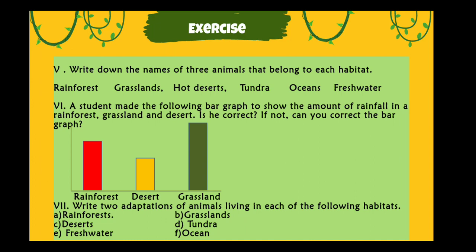Number seven: write two adaptations of animals living in each of the following habitats — rainforest, grasslands, deserts, tundra, freshwater, and ocean habitat.